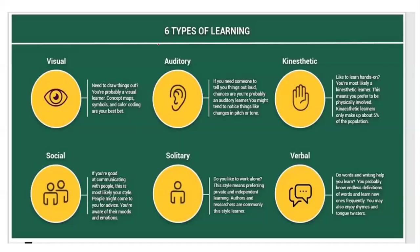We are going to talk about various types of learning: visual learning, auditory learning, kinesthetic learning, social learning, solitary learning, and verbal learning. Visual learning involves concepts in the form of maps, symbols, and color coding. Auditory learning gives more importance to speech or tone. Kinesthetics involves body movement. Social learning involves interactive sessions where you are aware of moods and emotions. Solitary learning refers to private and independent learning — this terminology is new and important to remember.